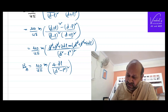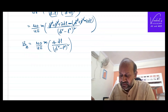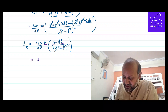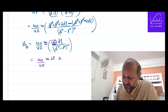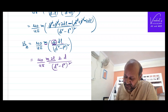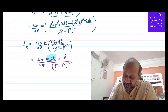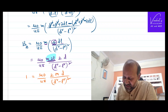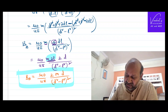The resultant magnetic induction on the axial line is B = (μ₀/4π) × 4dlm / (d² − l²)². Since m × 2l is the magnetic moment (capital M), we can rewrite this as: B_axial = (μ₀/4π) × 2Md / (d² − l²)². This is the final equation for magnetic induction on the axial line of a bar magnet.